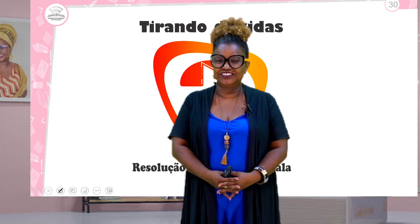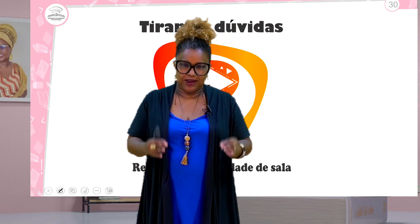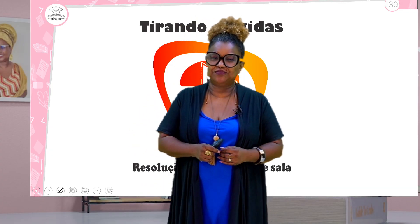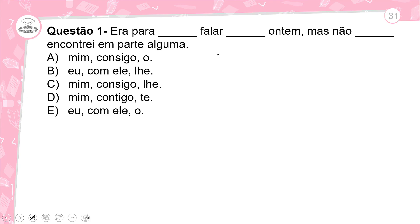Olá, amadinho! Chegou a hora da resolução da atividade de sala. Vamos lá, agora é a prática, para ver se você realmente entendeu o conteúdo de hoje. Vamos para a nossa primeira questão. 'Era para __ falar __ com ele ontem, mas não __ encontrei em parte alguma.' Qual é a alternativa que preenche corretamente as lacunas?